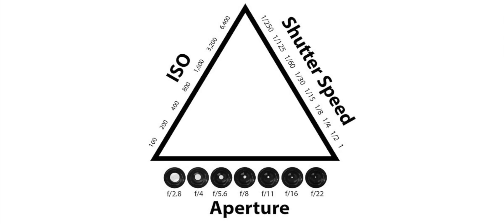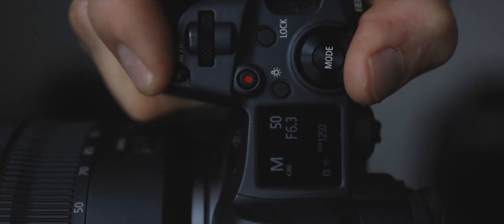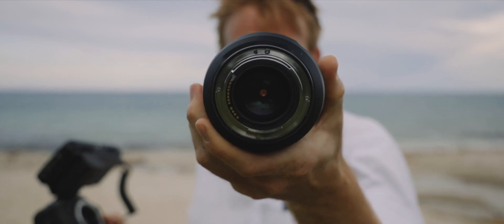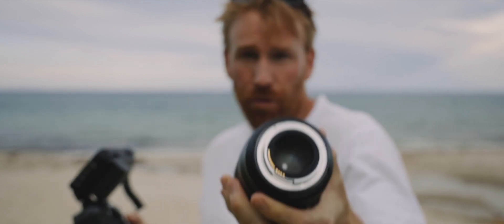Let's run through the exposure triangle. In photography it is the exposure triangle. Now let's talk about aperture. Aperture is the light that enters through the lens. I'm going to try and show you here — the aperture is this hole that you can see, and it is this tiny little hole that allows light to come through.